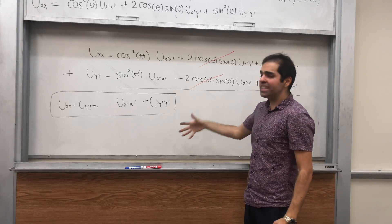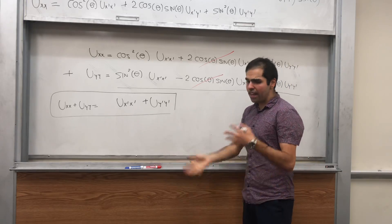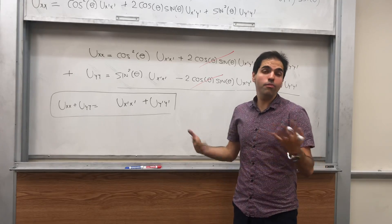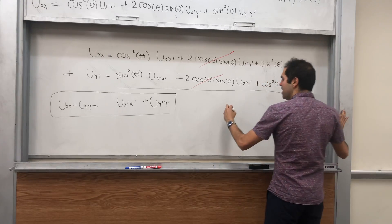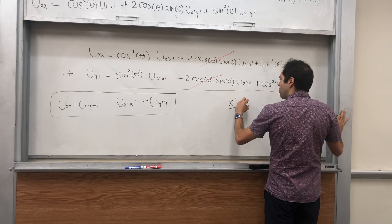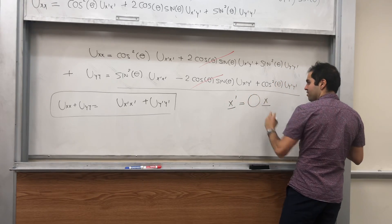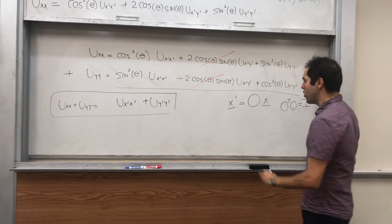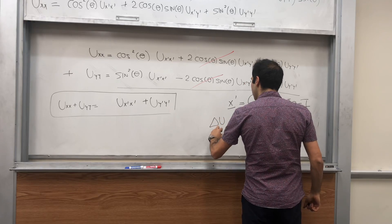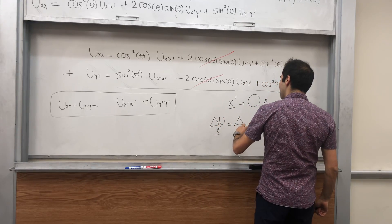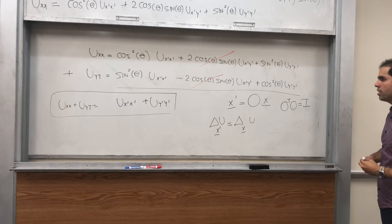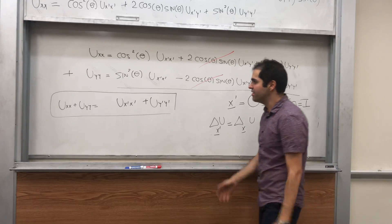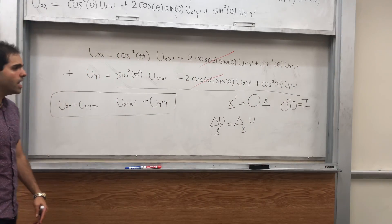You may also ask: what's the analog in higher dimensions? Well, the analog of this transformation in higher dimensions is with an orthogonal matrix. Namely, if you define the vector x prime to be O times x, where O is orthogonal — so O transpose times O equals the identity — then the Laplacian of u in the x prime variables equals the Laplacian of u in the original variables. The proof is basically the same, except it has a bunch of indices and becomes messy, but it's the same idea.